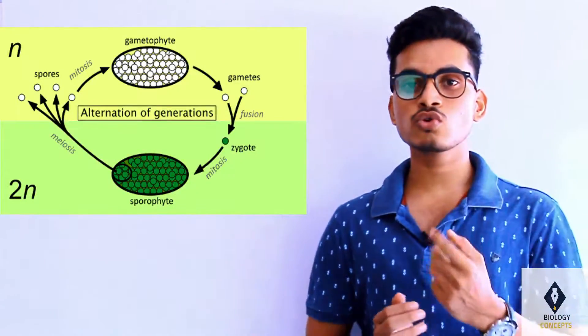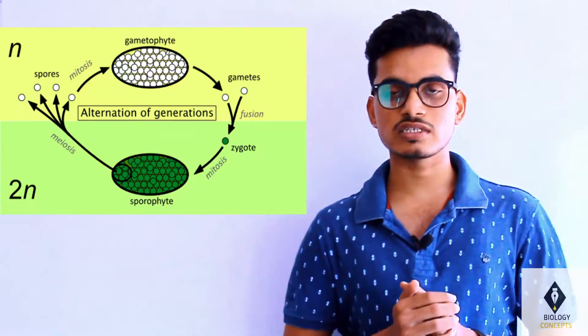Both the phenomena — apogamy and aposporia — are considered abnormalities in the life cycle of Pteridophyta. The normal life cycle of Pteridophyta contains two phases: the gametophytic phase, which is haploid, and the sporophytic phase, which is diploid. Alternation of gametophytic and sporophytic generations occurs through fertilization and meiosis.